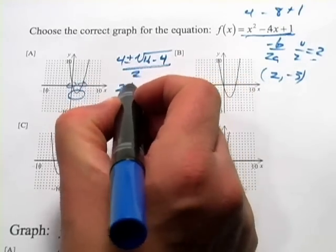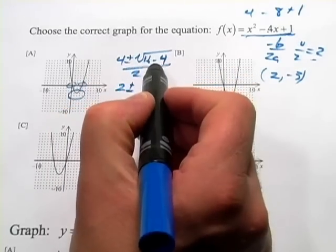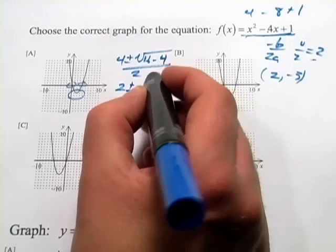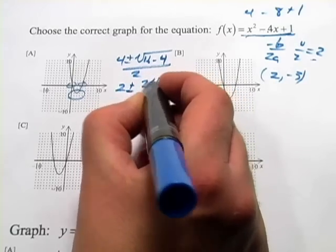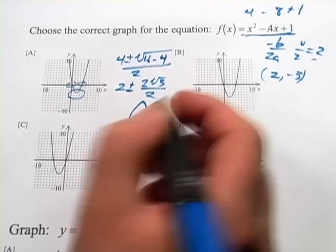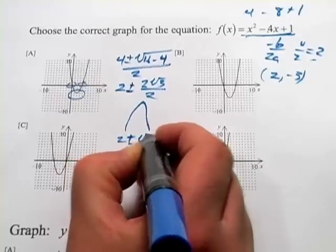So I would get 4 over 2, that's 2, plus or minus, and this is the square root of 12, which would be 2 times the square root of 3 over 2. So that's really just 2 plus or minus the square root of 3.